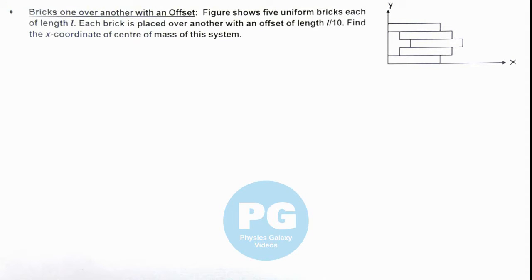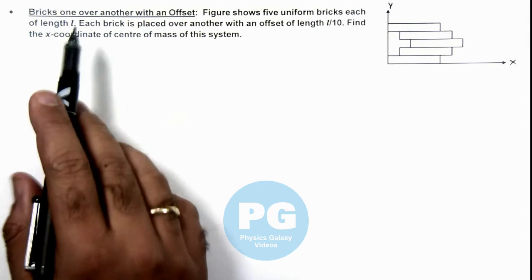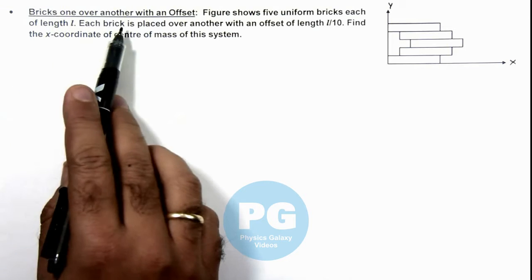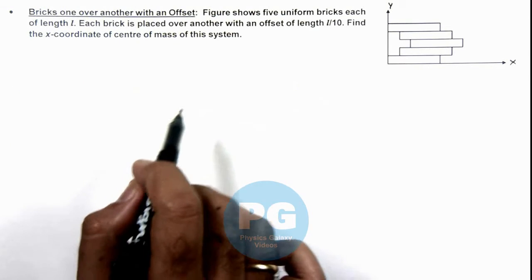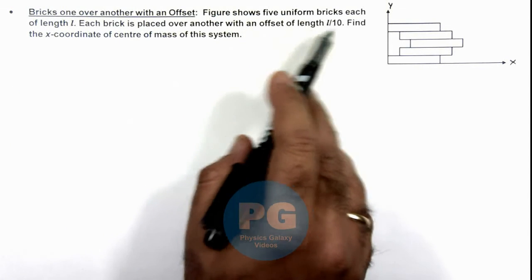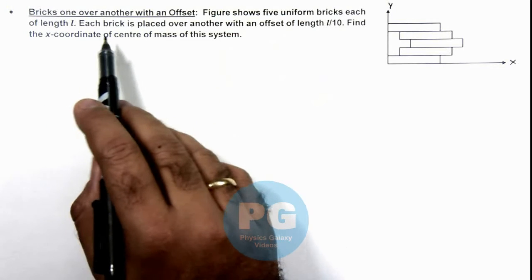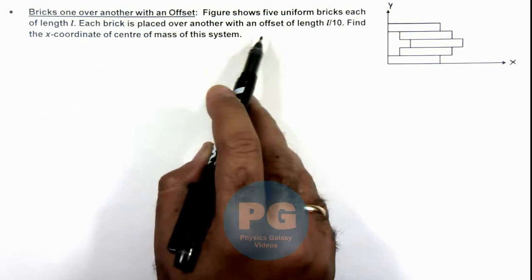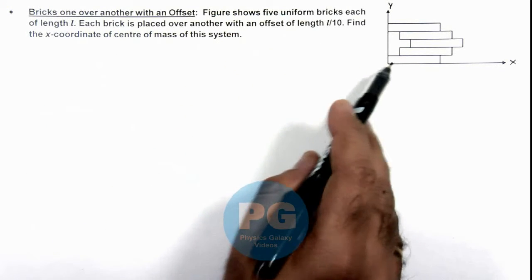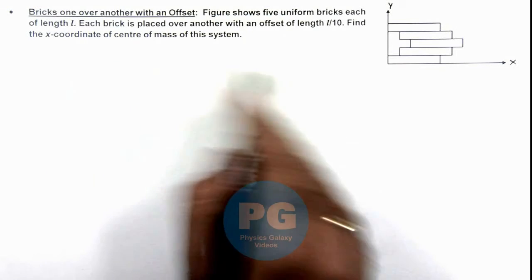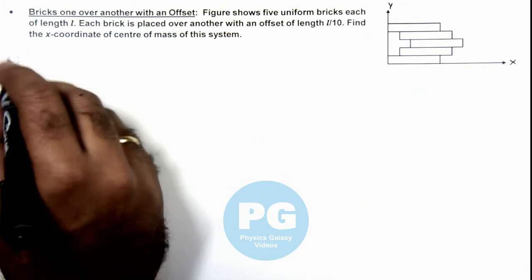In this illustration we'll analyze a system of bricks which are placed one over another with some offset. Here the figure shows five uniform bricks, each of length l, and each brick is placed over another with an offset of length l by 10. We are required to find the x-coordinate of center of mass of this system.